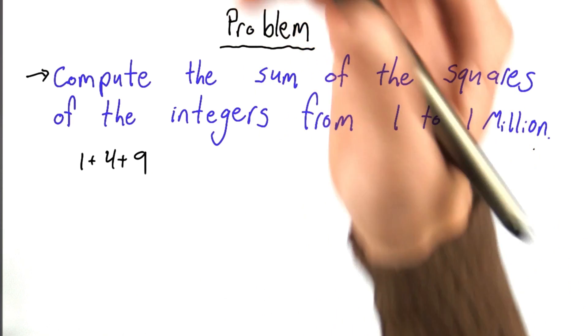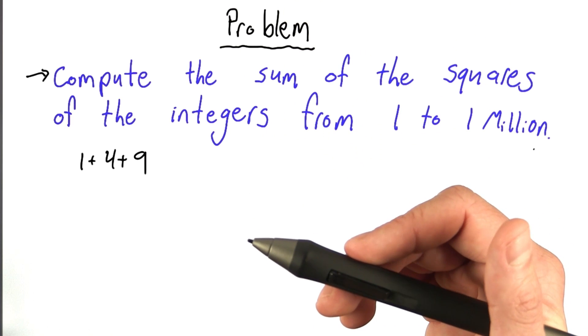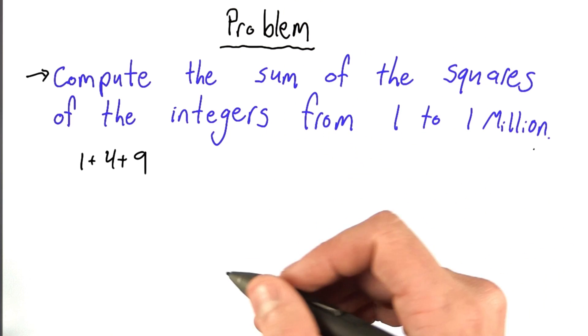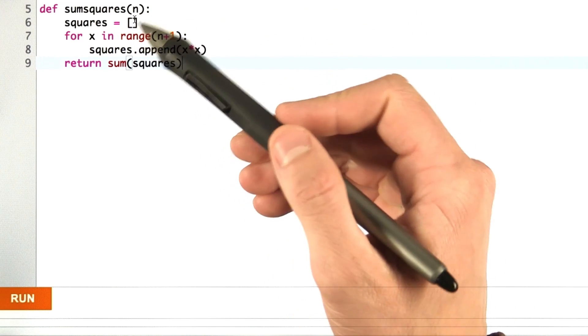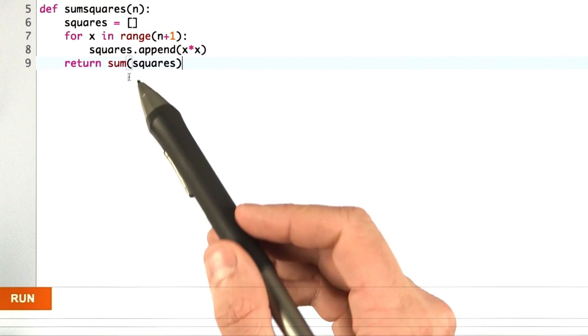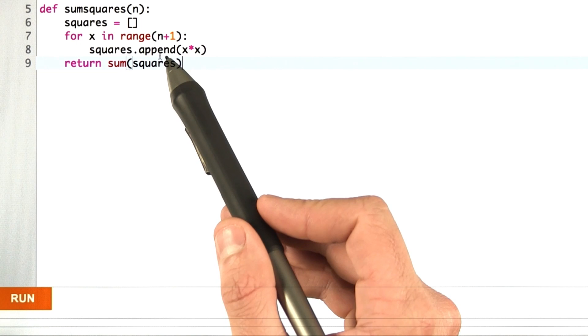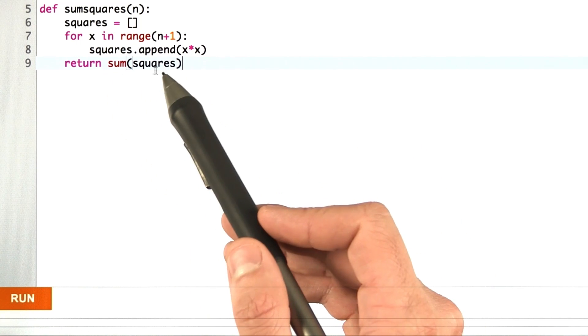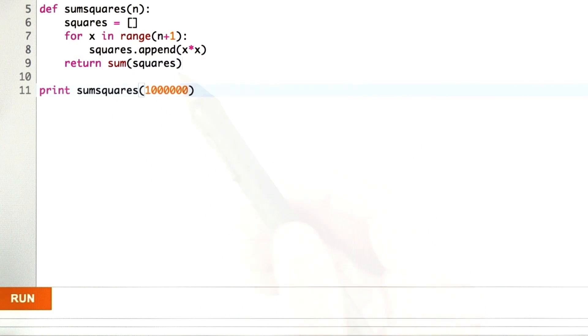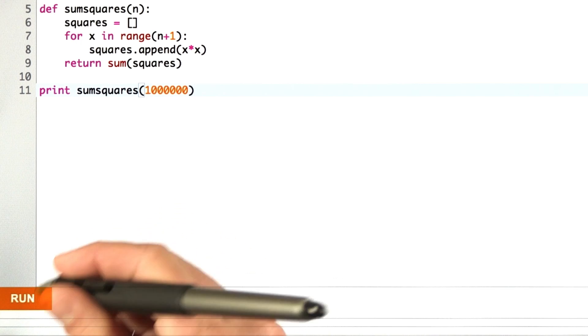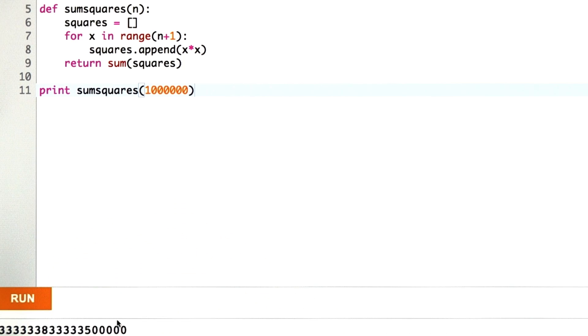And if you came from CS101, your answer is probably to start with a function. And maybe your function would have looked something like this, where we make an empty list, append all of the squares to that list, and then return the sum of that list. Then you would have called your function with an argument of 1 million, and you would have gotten your answer.